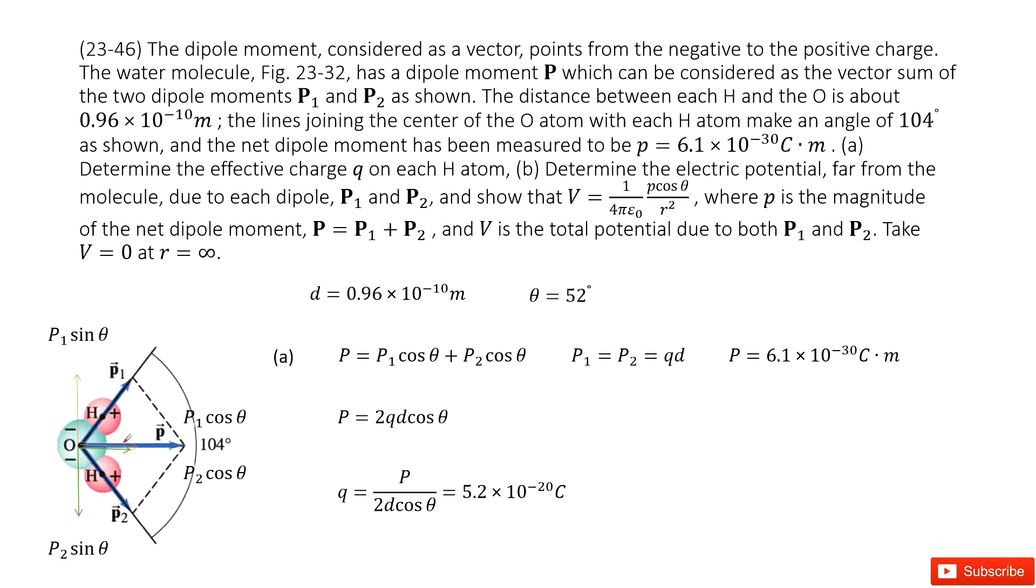It tells us we have the dipole momentum p, and it can be considered as the vector sum of p1 and p2. And this p is given. We also know the angle. From these hydrogen atoms to the next hydrogen atoms is 104 degrees.